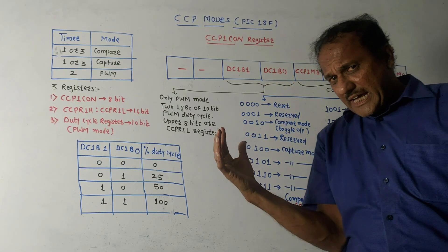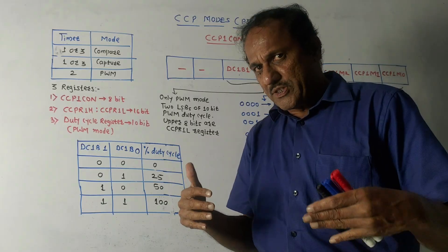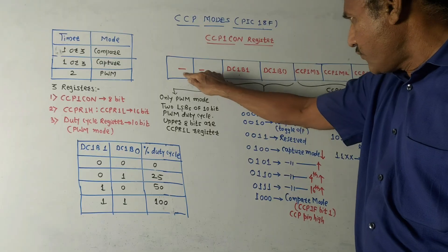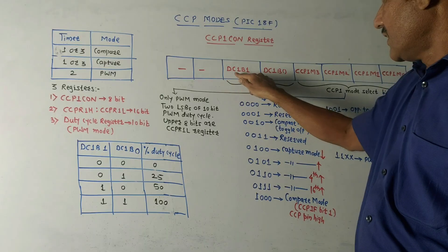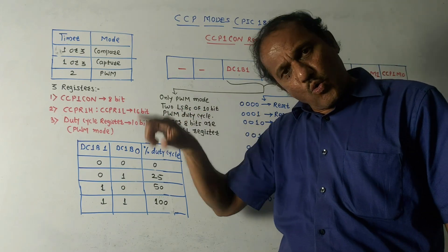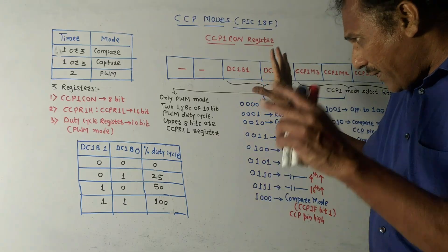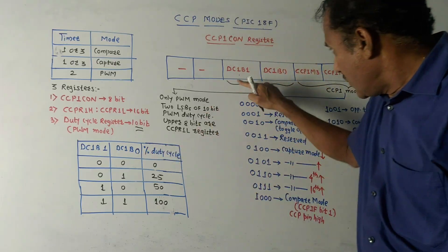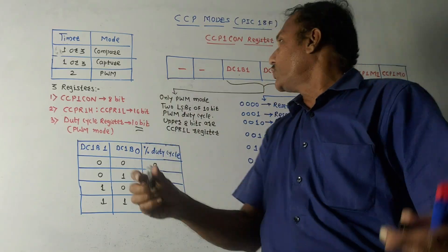This is the diagram for the CCP1 control register. The bits are used for controlling the capture, compare, and PWM options. The first two MSB bits are reserved. The next bits are DC1B1 and DC1B0 — these mid bits are only used in PWM mode. In PWM there are 10 bits total, and these two bits are used to control the duty cycle.